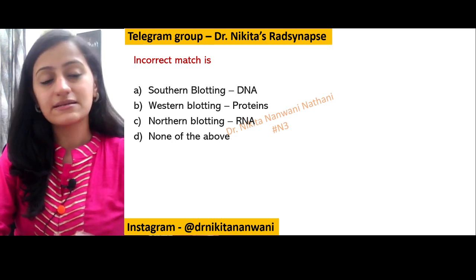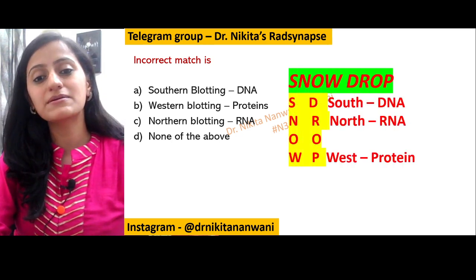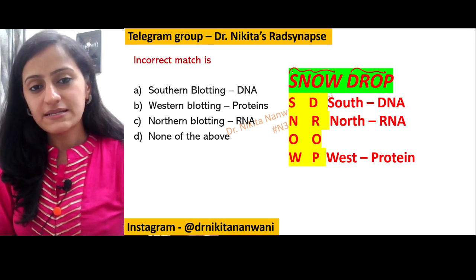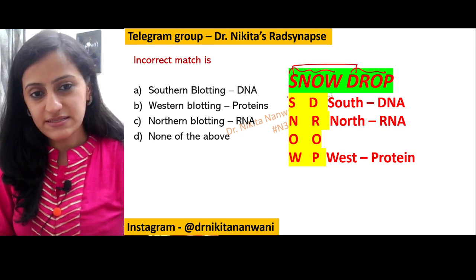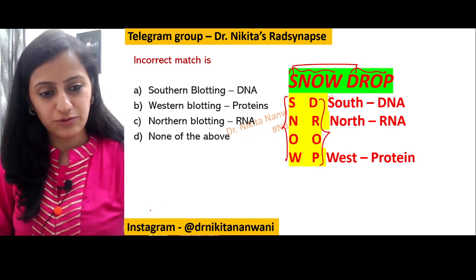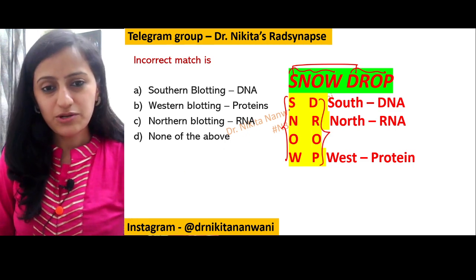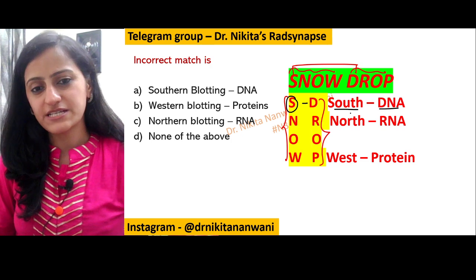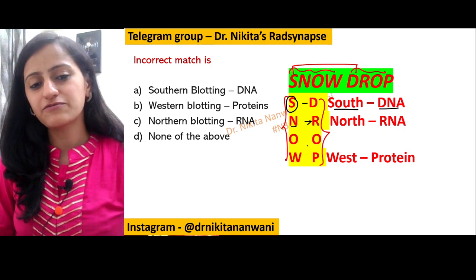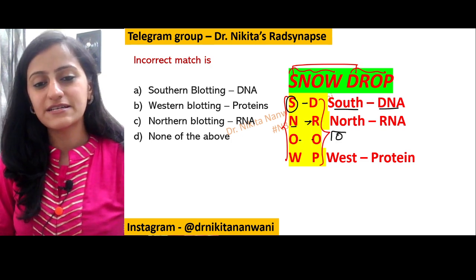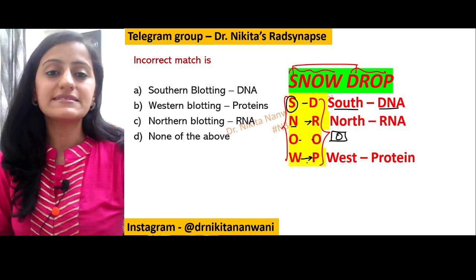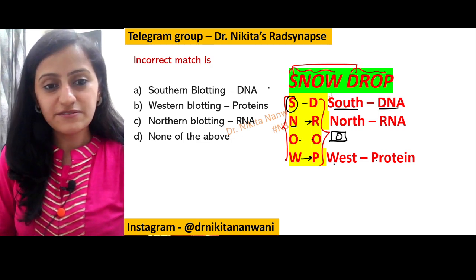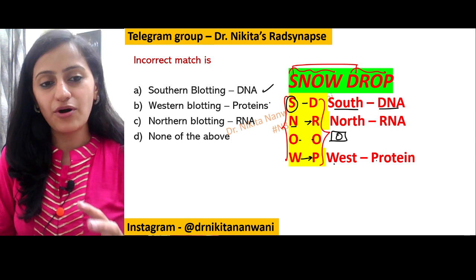An easy trick to remember the blotting techniques is the mnemonic 'Snow Drop.' S goes with D — Snow Drop — so S is for D: Southern is for DNA. N is for R (zero-zero, nothing in between): Northern is for RNA. And W is for proteins: Western is for proteins.